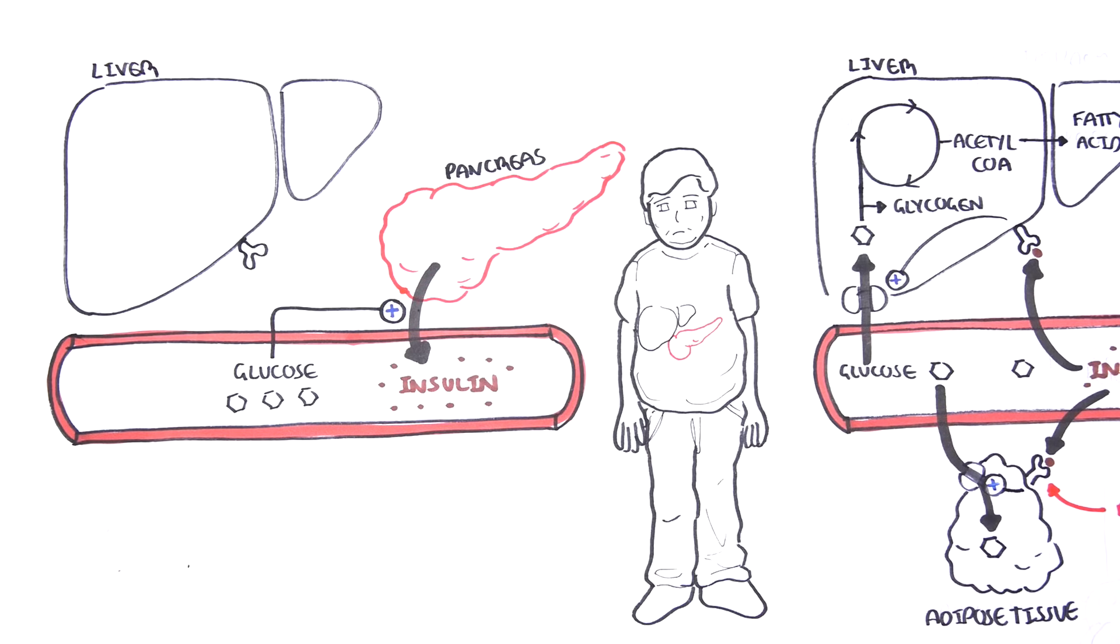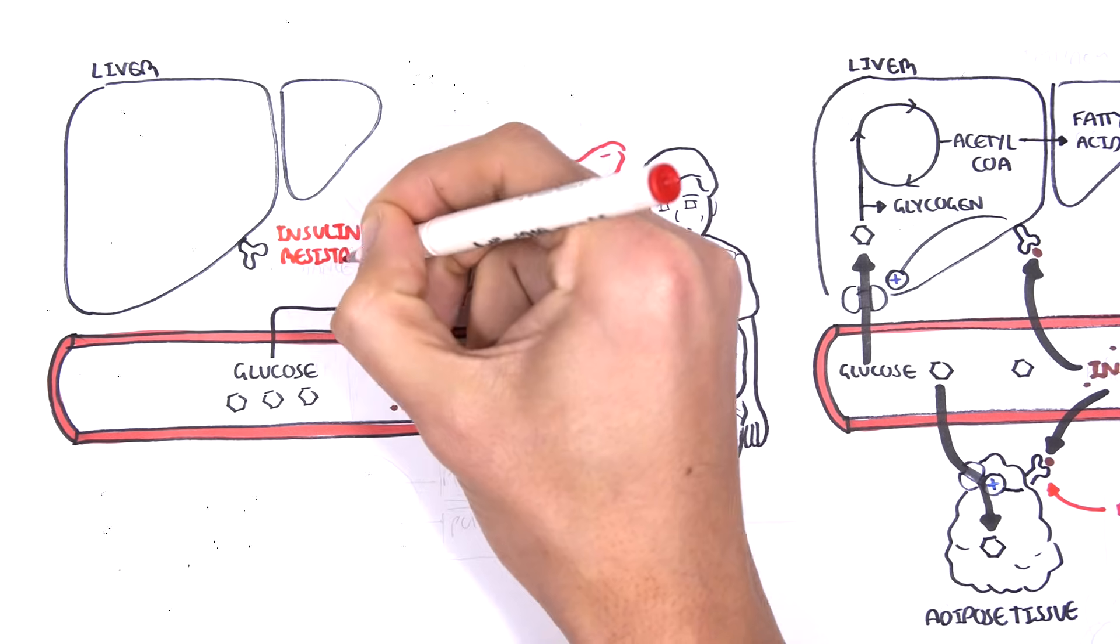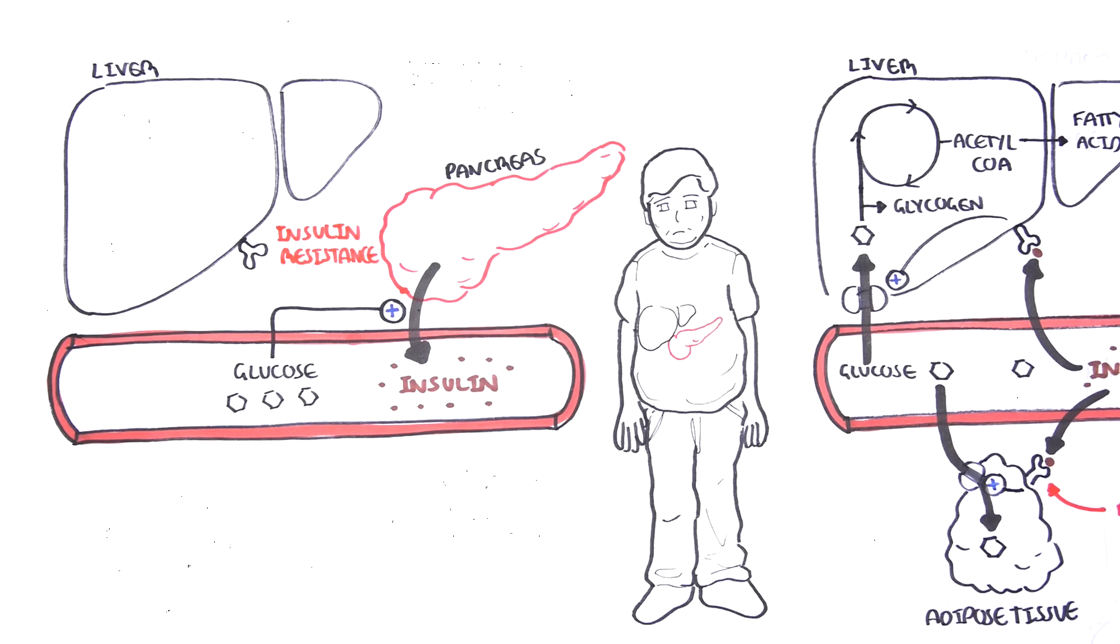In type 2 diabetes, there is insulin resistance, which means that the receptors insulin works on does not actually work properly or as effectively. And so insulin essentially does not work properly on liver, adipose tissue and skeletal muscle.